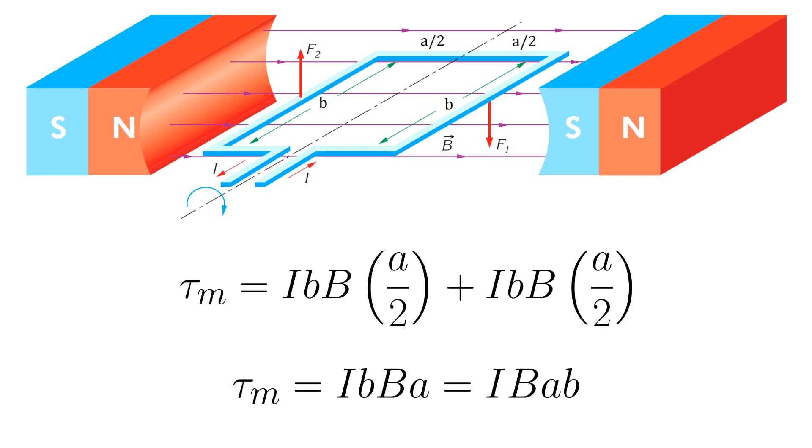As I said, a is the width, b is the length, so a times b is the multiplication of the sides of the rectangular loop—it's the area of that loop.